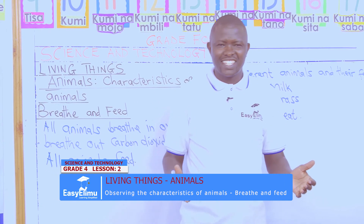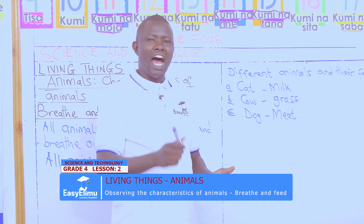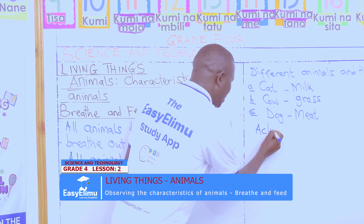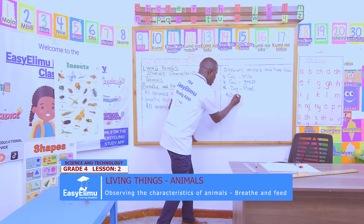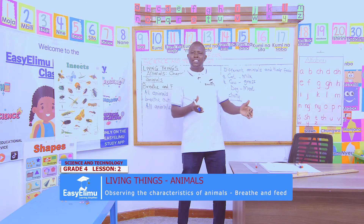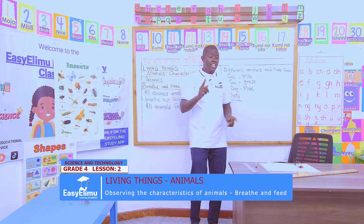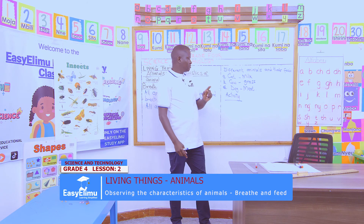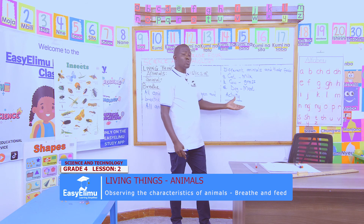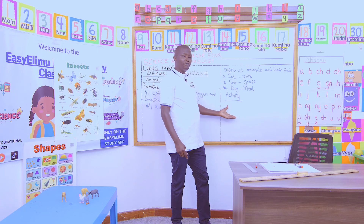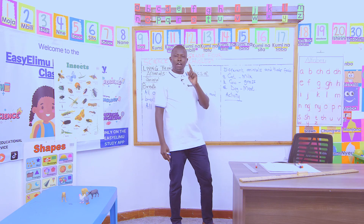Any question, class? Anybody with a question? Now, this is the activity for when we go home: go to the nearby farm and identify the different feeds which are consumed by the animals found in that locality. Identify the type of food those animals feed on.